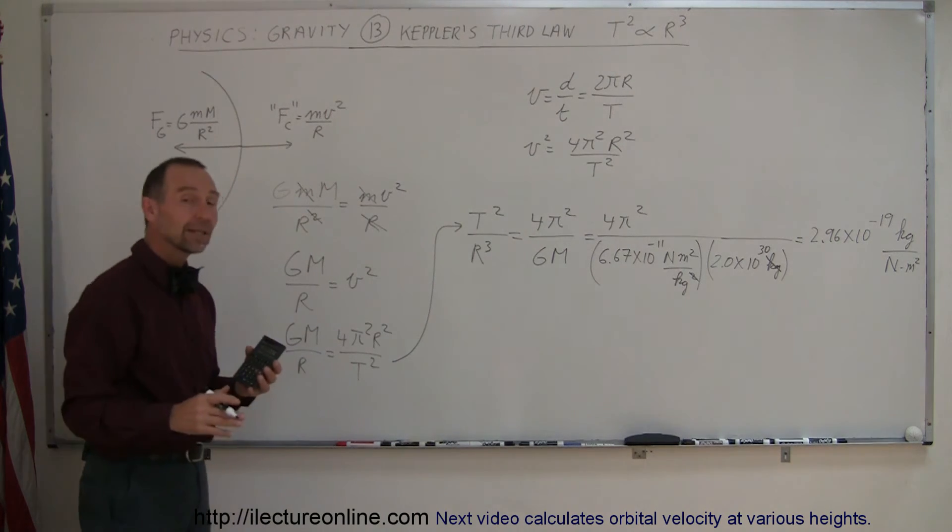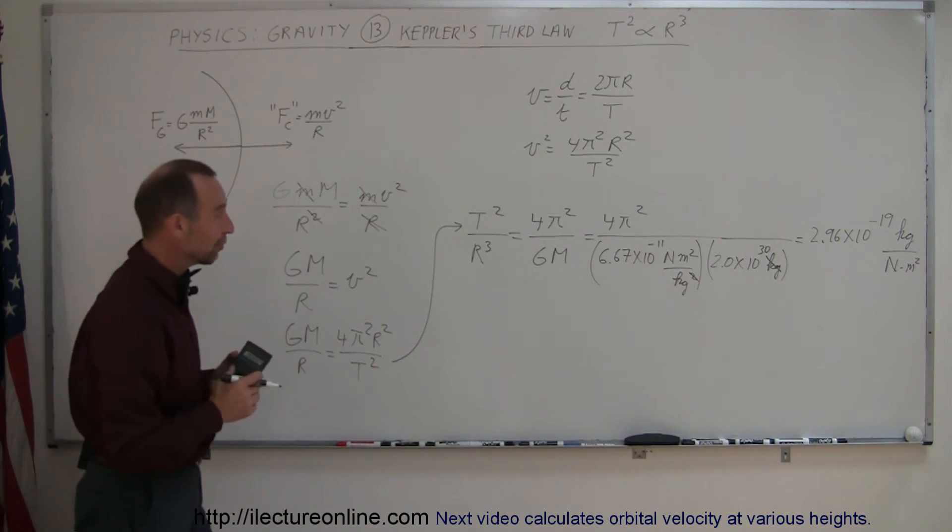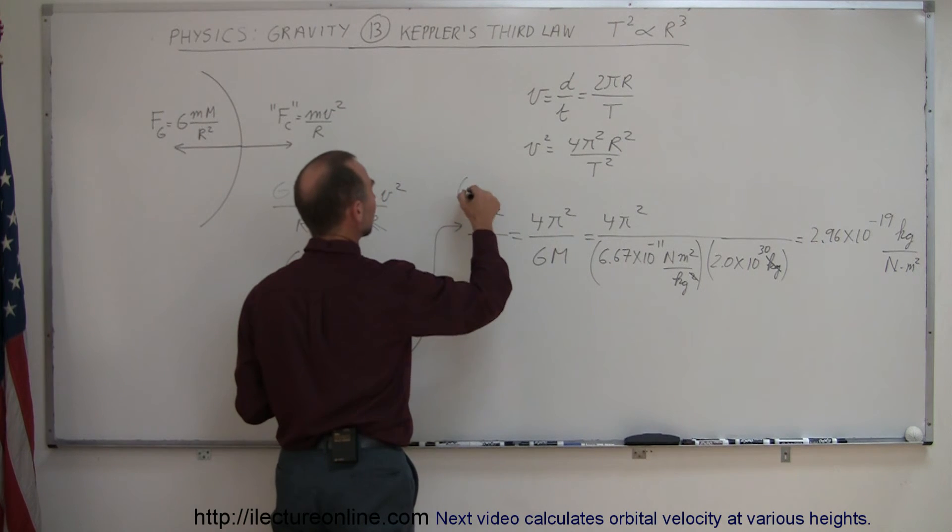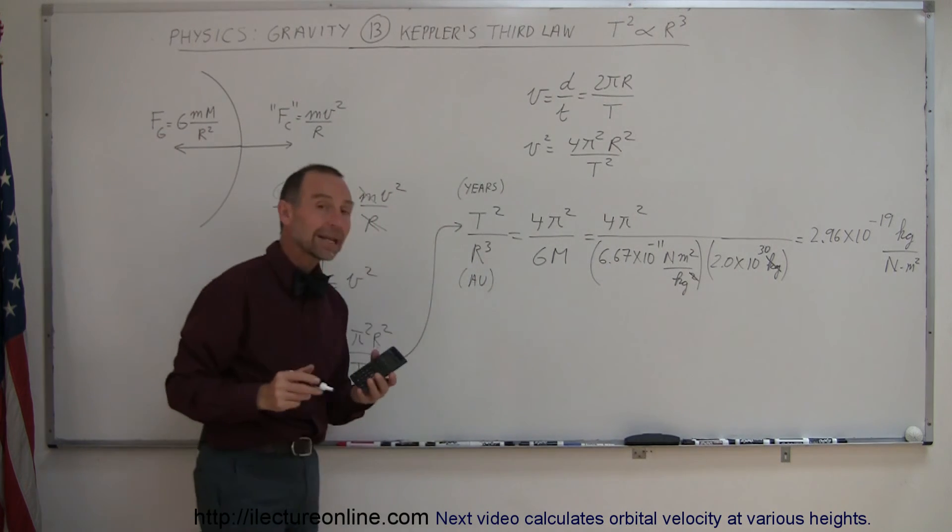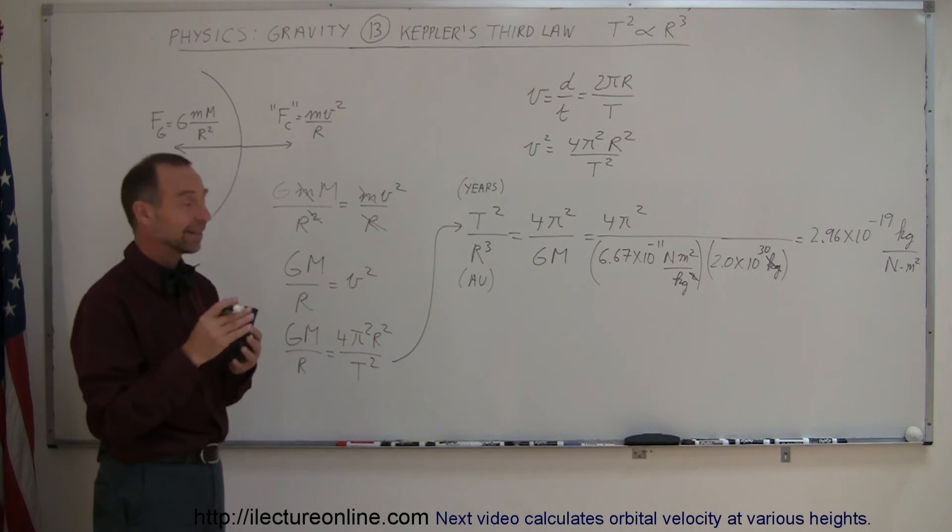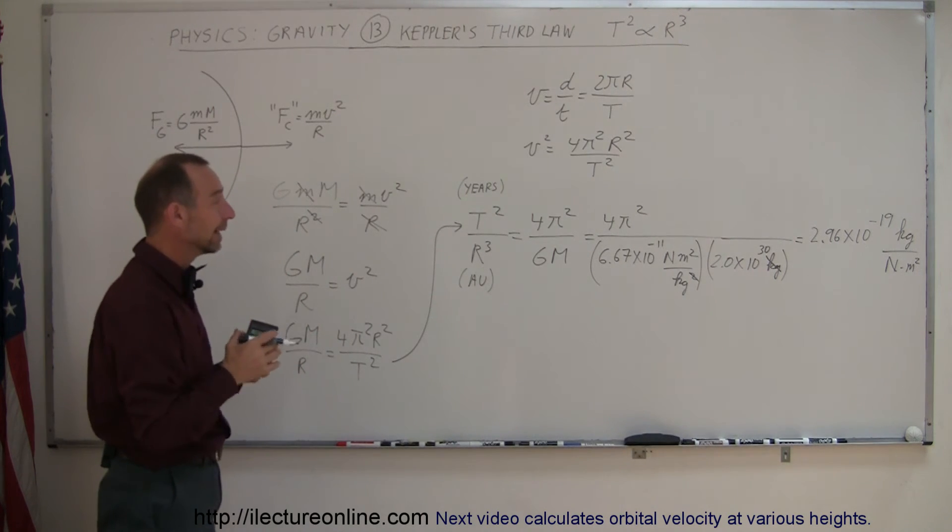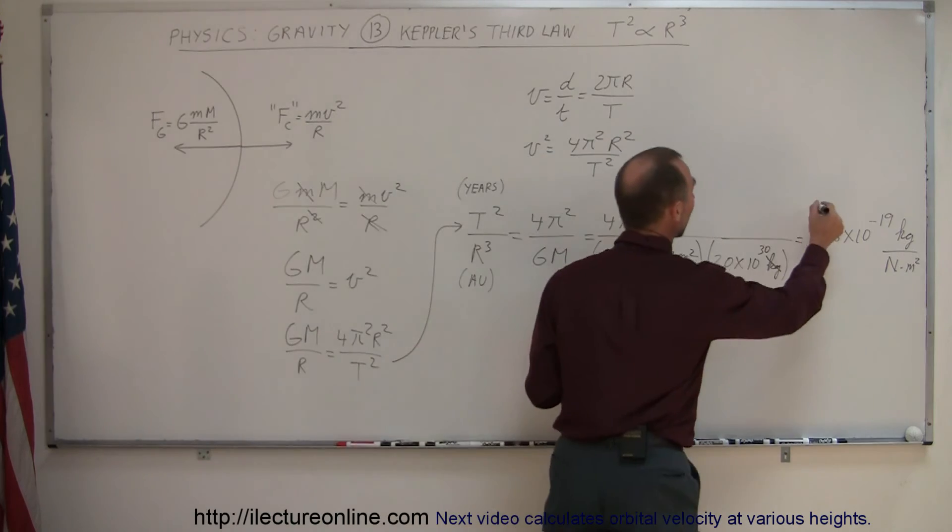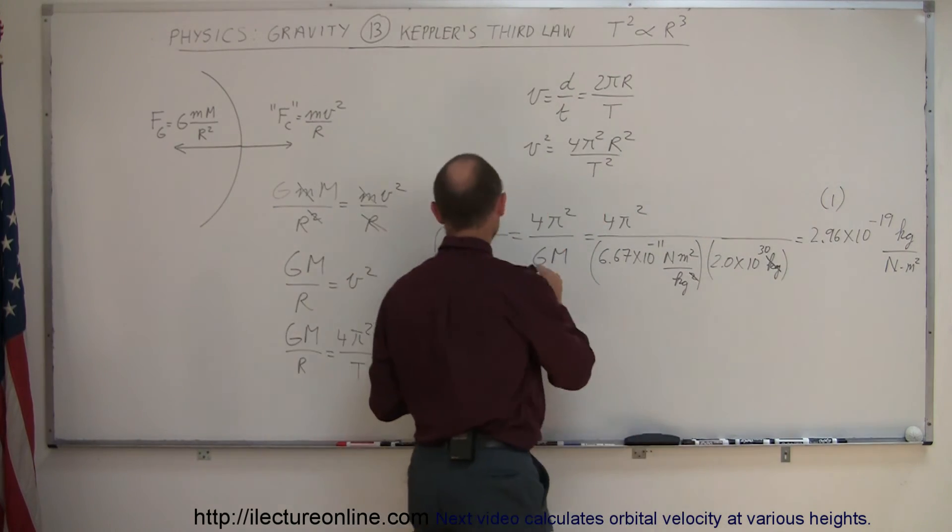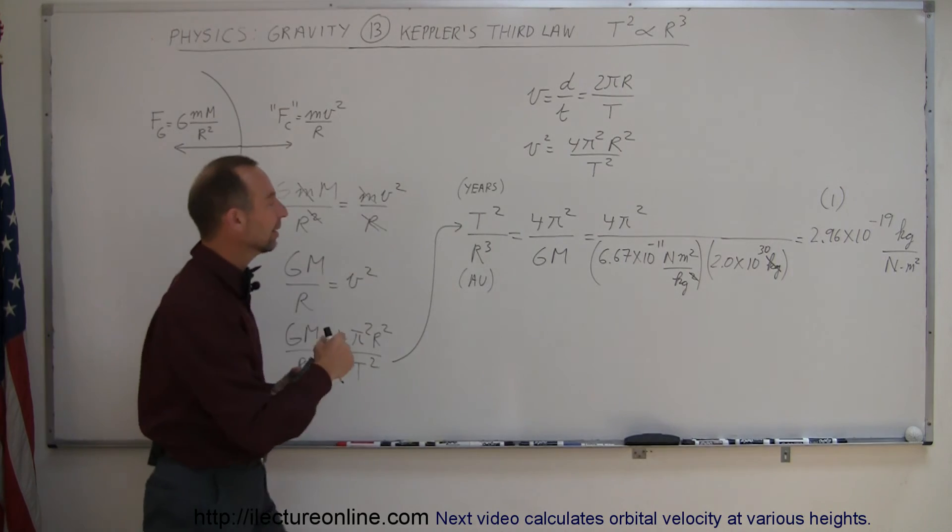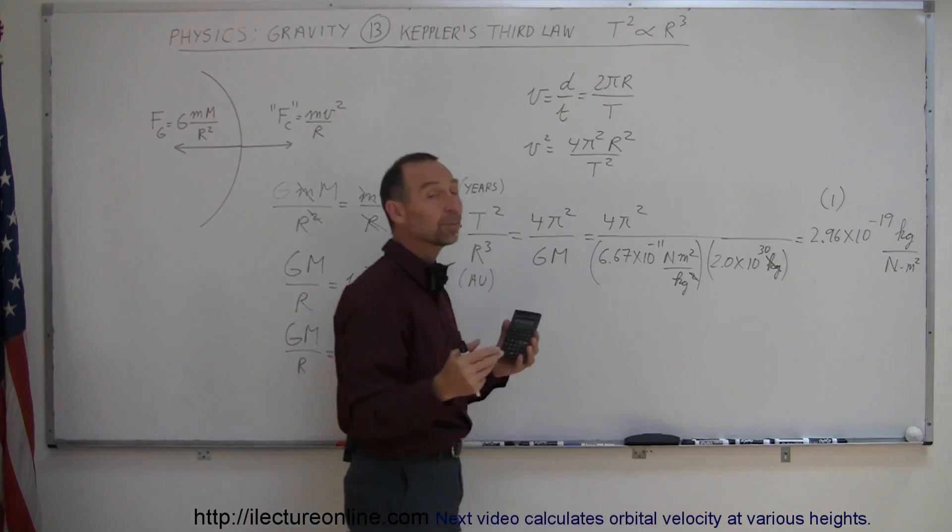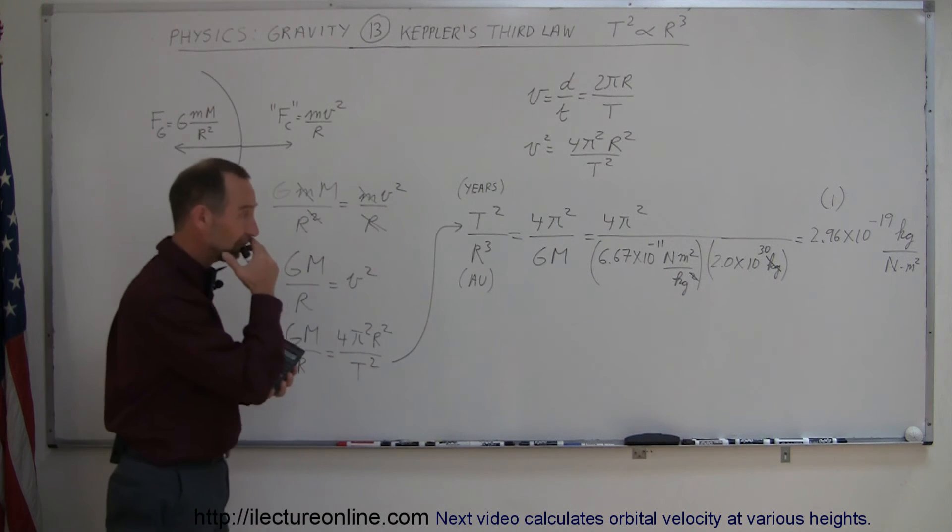Now, it turns out we can even make it a little bit easier than that if we call the period, if we use the years for the period, and we use astronomical units for the radius, and an astronomical unit is the exact distance between the Earth and the Sun, then the constant becomes 1. Now, of course, if we use the period in seconds and the radius in meters, then we get this as the constant, but it will be the same for every planet in our solar system.